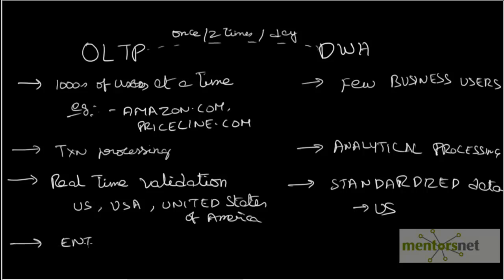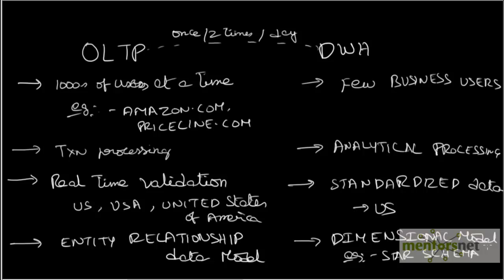OLTP uses entity relationship data model which is highly normalized and suitable for transactional processing. Whereas data warehouse uses dimensional modeling which is also called star schema or snowflake schema. So there are some fundamental differences between OLTP and data warehouse.